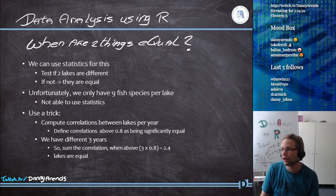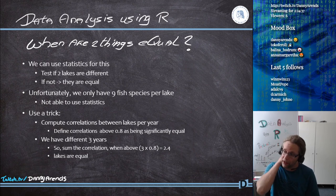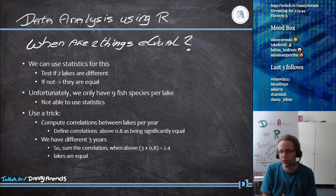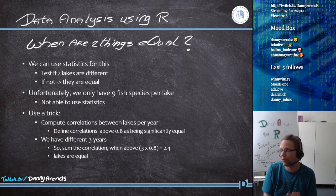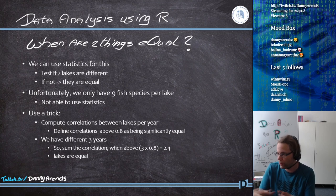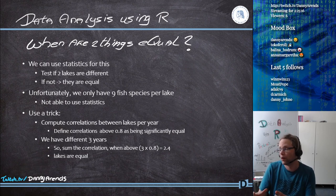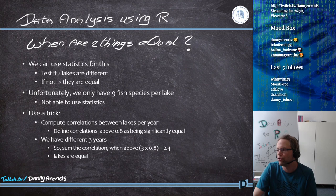I decided that everything correlated above 0.8 is more or less equal. Since we have three different years, if I sum correlations from each year, a summed correlation above 2.4 means the lakes are equal. On average, if the correlation between two lakes across three years is above 2.4, the correlation from year to year tended to be relatively good.